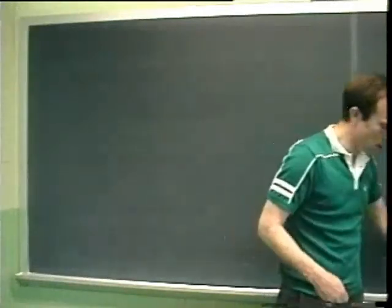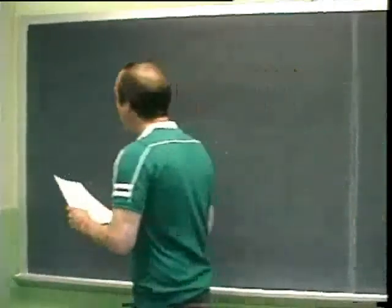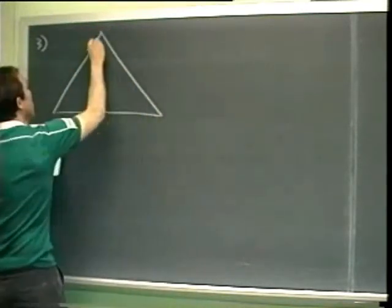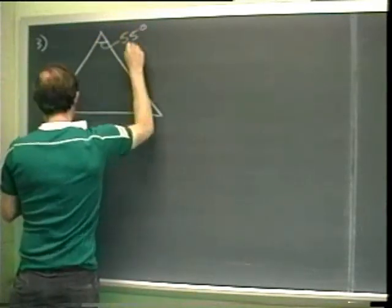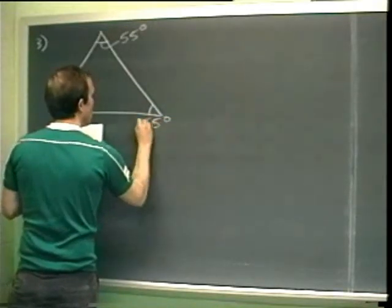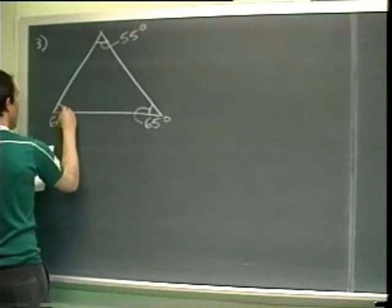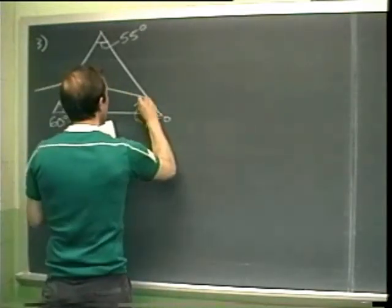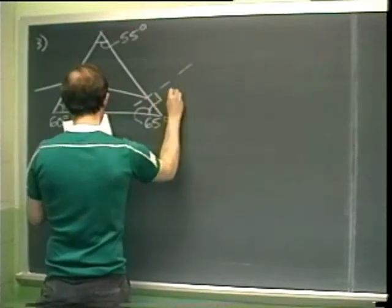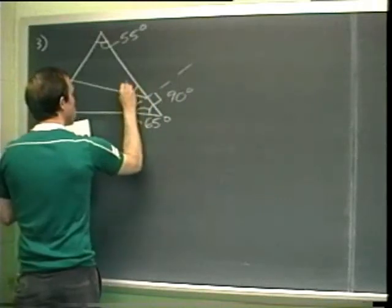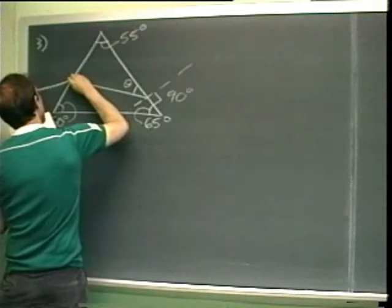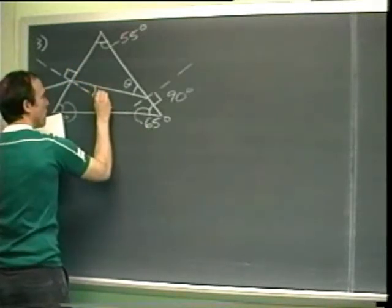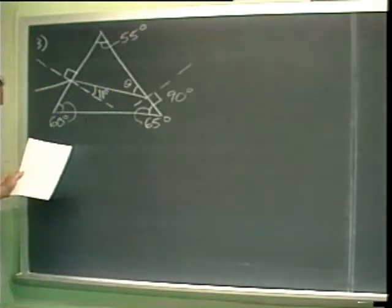Number 3: they give us a triangle with some lines and ask us to find theta. They say one angle is 55 degrees, another is 65 degrees, and there's a line coming in. There's the theta they want us to find. They draw a perpendicular and say this angle is 11 degrees, and we're to find theta.